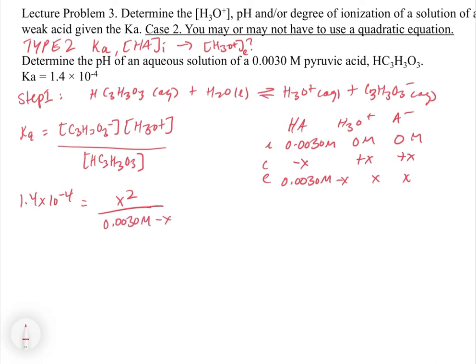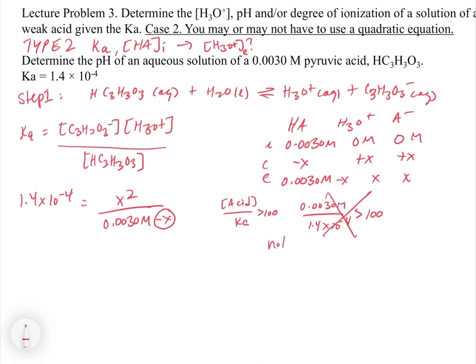And now, of course, at this point, you're going to ask yourself, can I do my approximation? Based on this set of parameters, can I eliminate this X? And so what we're going to do is we're going to take our concentration of our acid divided by our Ka and see if it's greater than 100. And in this case, we're going to do 0.0030 molar divided by 1.4 times 10 to the minus 4. And we're going to ask ourselves, is this greater than 100? And it's not. So in this case, the assumption is not valid.